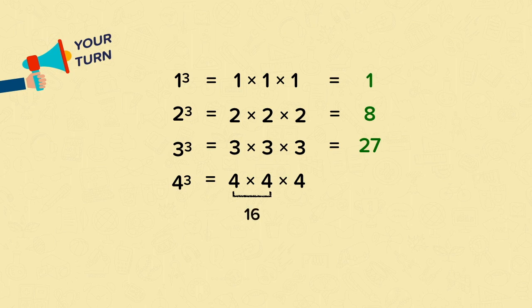You may have partitioned 16 to make it easier for you. So if you partitioned it into 10 and 6 and did 10 times 4 equals 40, and 6 times 4 equals 24, and added them together to get 64. Very well done. 4 cubed equals 64.